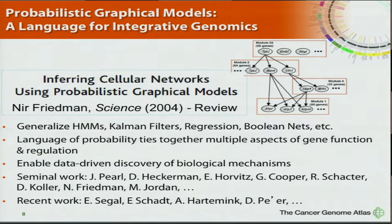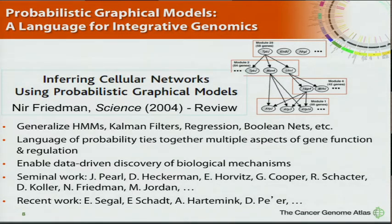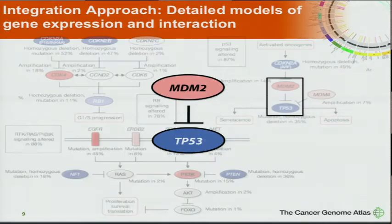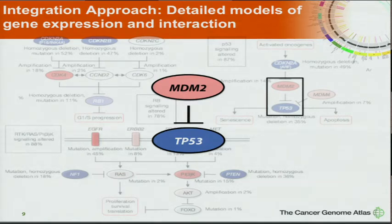To model these two pieces of information, we're standing on the shoulders of giants. There's been lots of development in the 80s and 90s through seminal work by Judea Pearl and Heckerman in the early 90s, and more recently by Daphne Koller, Nir Friedman, and Eran Segal. I'd recommend a really nice review article by Nir Friedman in Science in 2004. We have a simple example: an oncogene MDM2 that is known to inhibit P53.